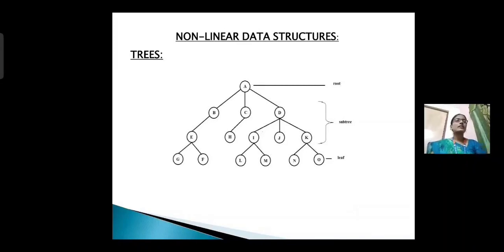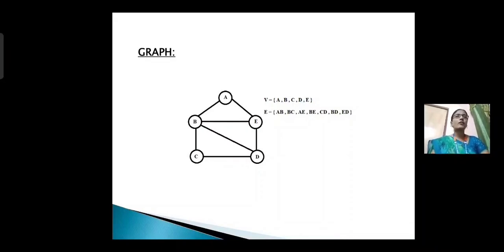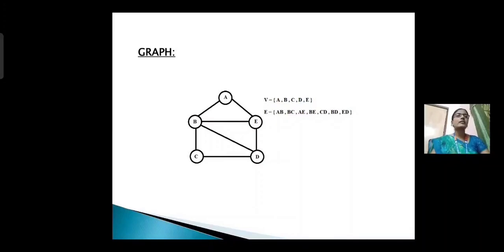Next one is graph. If you look at this diagram, a graph is a non-linear data structure and is denoted by G(V, E), where V is a set of vertices and E is a set of edges. A graph is used to represent many-to-many relationships with the data items. Each edge is connected by two vertices. A and B are the vertices and the connection is the edge.